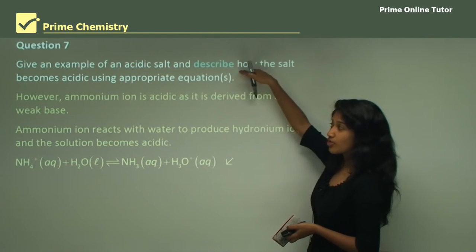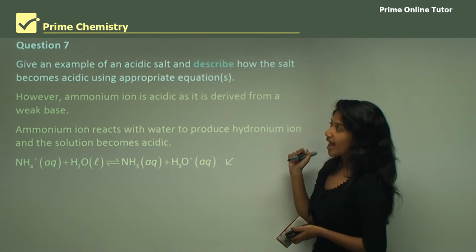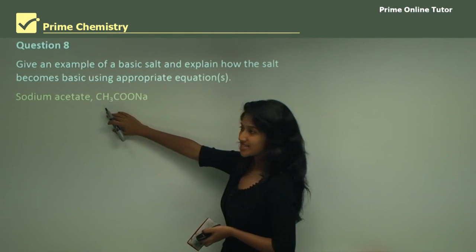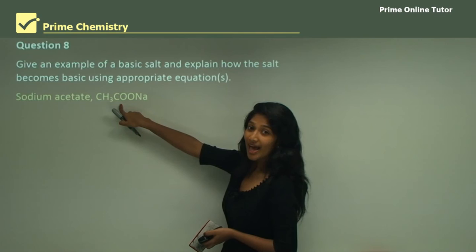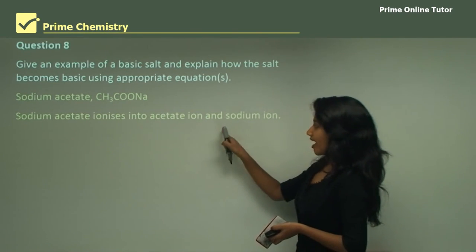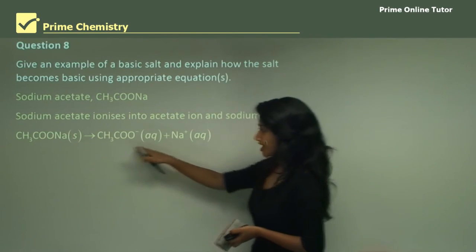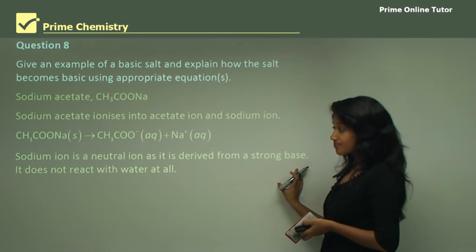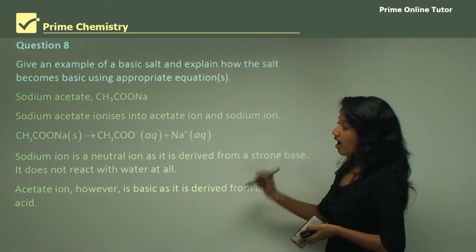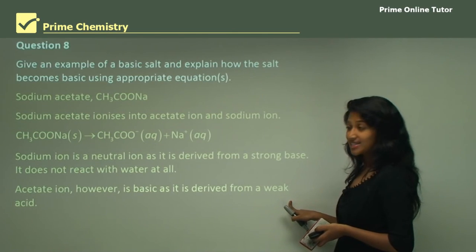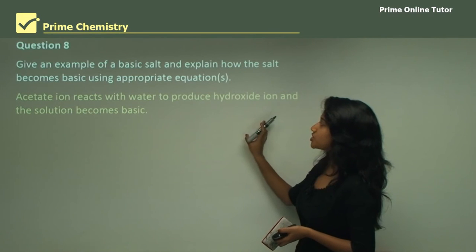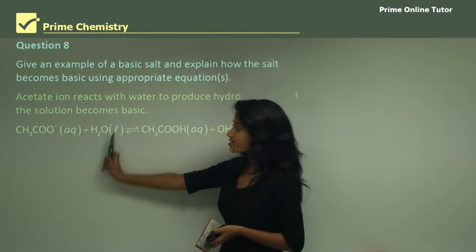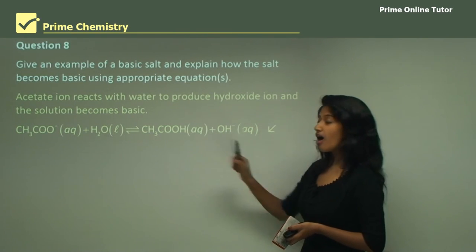That is how you describe your choice for an acidic salt. For Question 8: give an example of a basic salt — sodium acetate. Sodium acetate comes from a strong base and a weak acid, and ionizes into acetate ions and sodium ions. Sodium ions are neutral as they are derived from a strong base and do not react with water. The acetate ions are basic because they are derived from a weak acid.